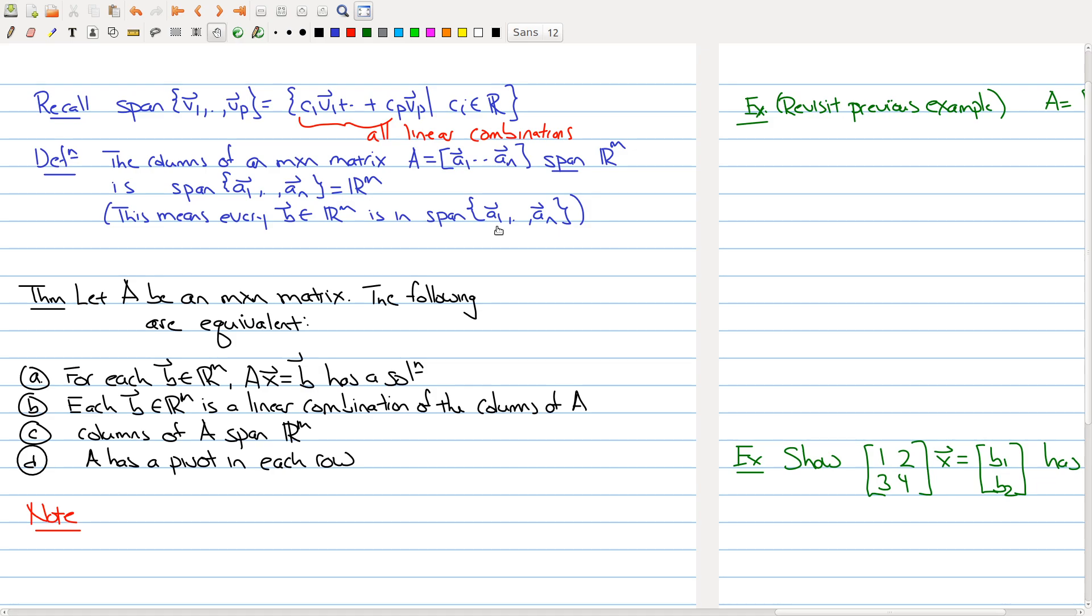So using this terminology, we get the answer to that question I asked a couple pages ago. Let's say you have an M by N matrix, and then the following are equivalent. Just to make sure you're aware of what this means, because this terminology appears a lot in math, what this means is that all the statements are all true or all false.